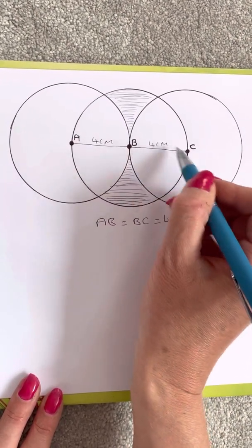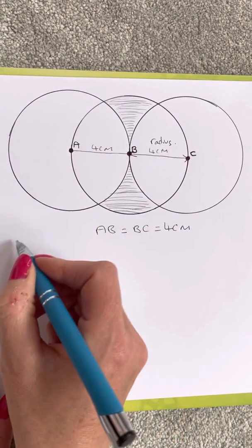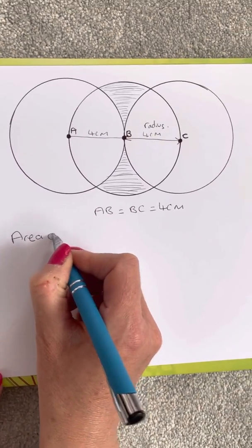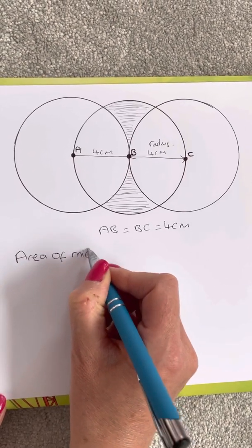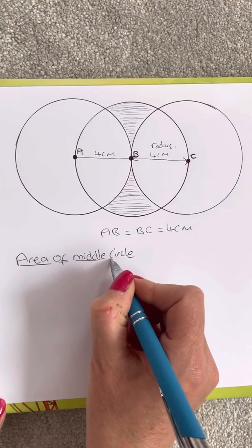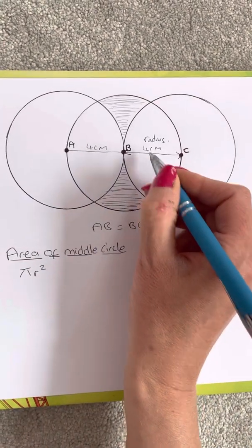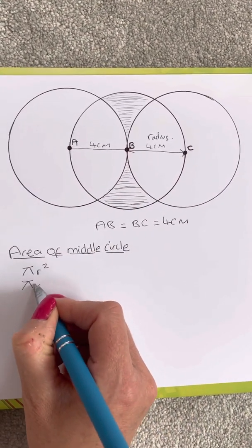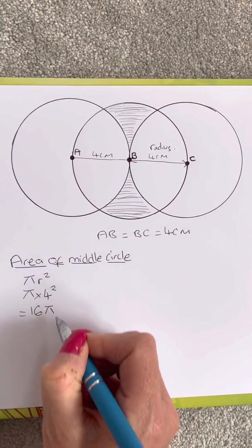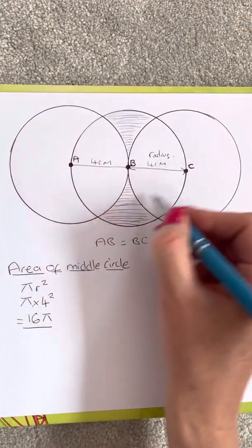For the middle circle, we can see we've got the radius — that's the centre of the circle to the outside, so this bit here is the radius. I'm going to label it clearly: this is the area of the middle circle, and in the exam I would say label things as you're going along in a logical order. Area of a circle is pi r squared. The radius is four, so we pop four in. We square that — four times four is 16 — and you get 16pi. So we've found the area of that middle circle.